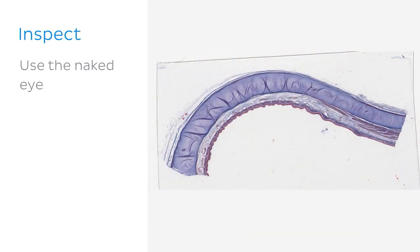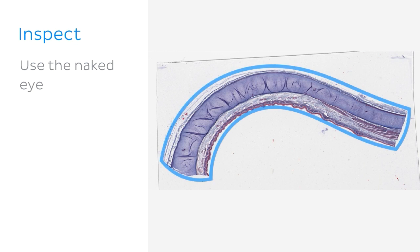For example, in this cross section, an annular or ring-shaped preparation can be seen. If you know this before using the microscope, you're one step closer to recognizing structures on the preparation.